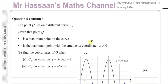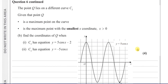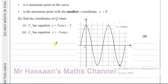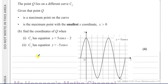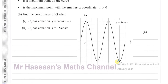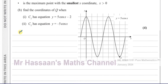For Part B: the point Q lies on a different curve C2. Q is a maximum point on the curve with the smallest x-coordinate where x is greater than 0. We need to find the coordinates of Q. Let's call g(x) = 5 cos x — the function we've already drawn.